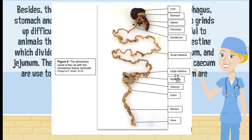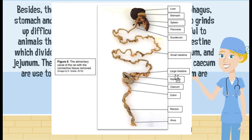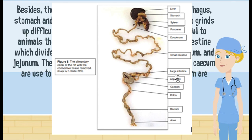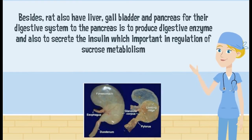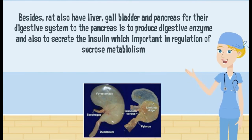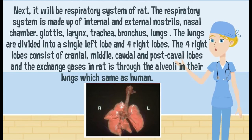The digestive system also consists of the pharynx, esophagus, stomach, and a gizzard found in rats too, which is used to grind up difficult-to-digest food. It also consists of the small intestine, which is divided into three sections: duodenum, ileum, and jejunum. The small intestine leads to the cecum, which is used to digest cellulose. The large intestine and rectum are also found in the digestive system, along with the liver, gallbladder, and pancreas. The pancreas produces digestive enzymes and secretes insulin, which is important in the regulation of glucose metabolism.